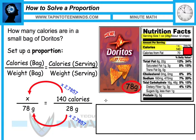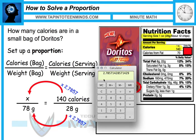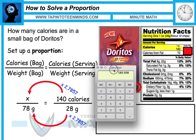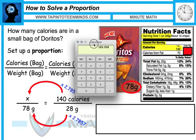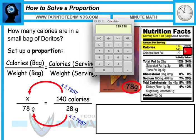We know the same for our number of calories. So in our calculator, what we're going to do is take that number and multiply it by 140 calories, and we should get approximately 390 calories as our answer.